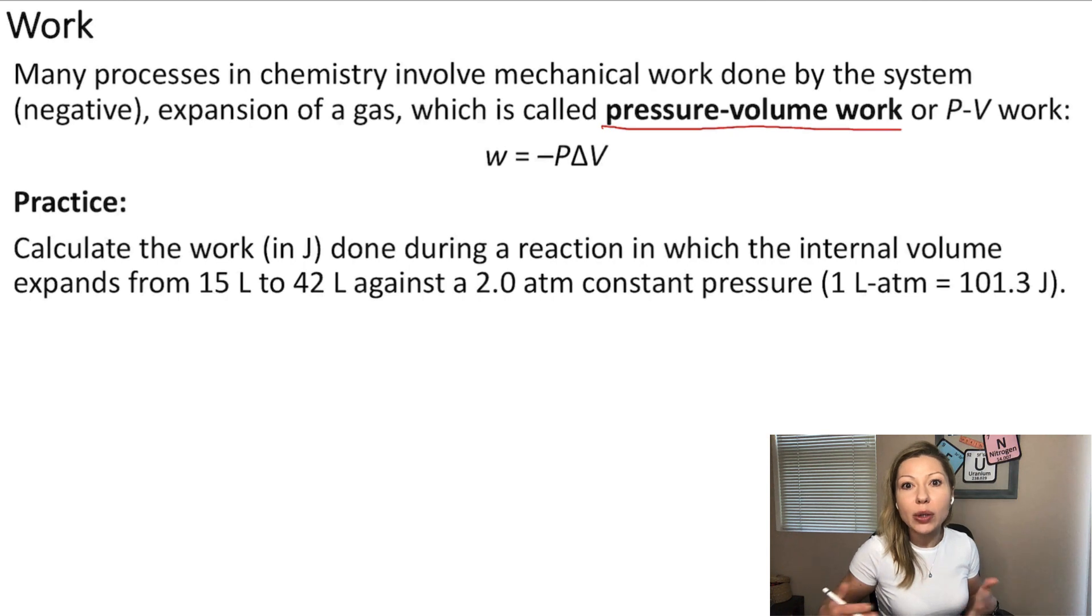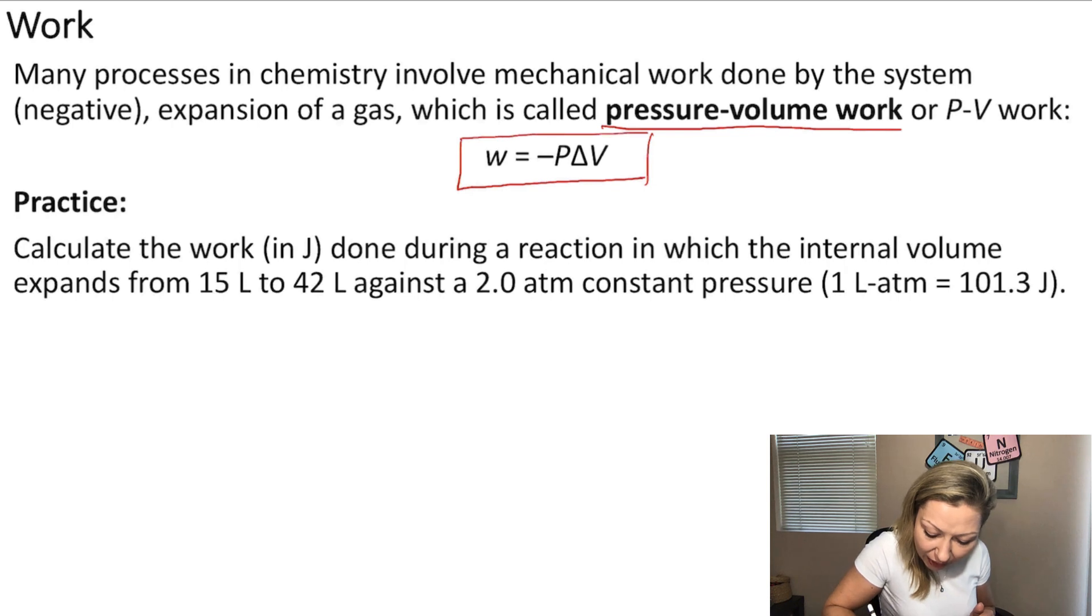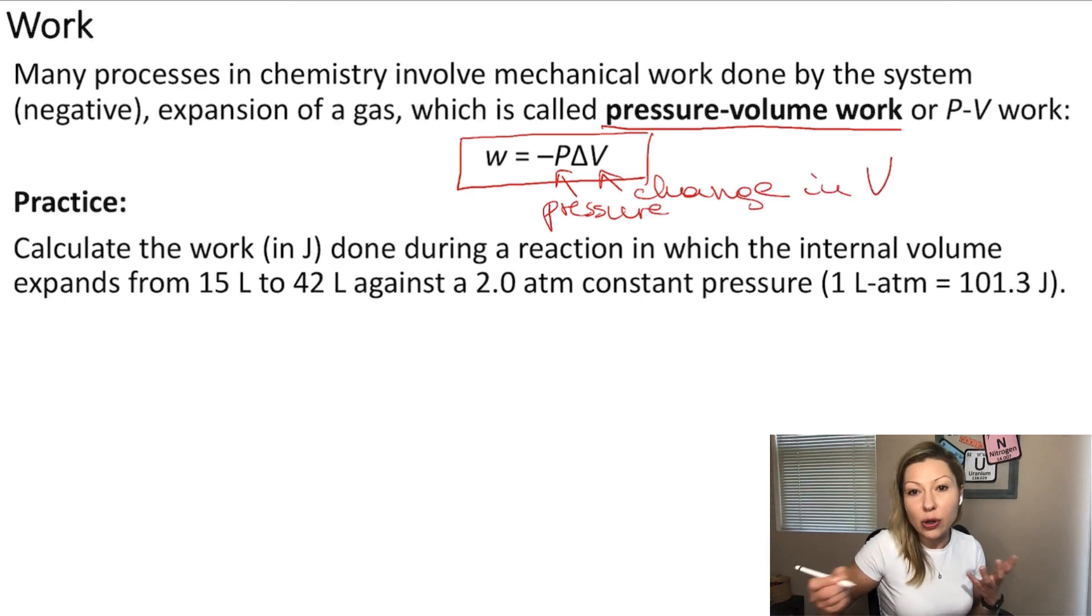So how can we calculate the work done in these type of situations? Well, we have a very handy formula. The work done equals negative pressure times the change in volume. So the P is the pressure and delta V is the change in volume. So the change in volume is just V final minus V initial. All right.